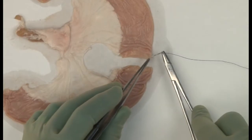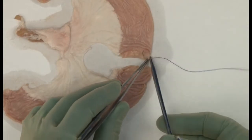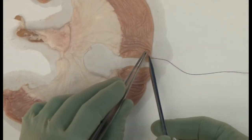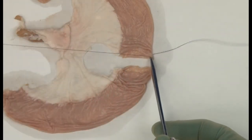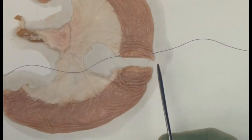We now have the task of an end-to-end anastomosis of the two remaining bowel ends. For this anastomosis we will use an interrupted full thickness suture.